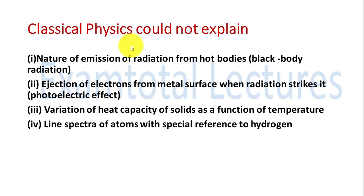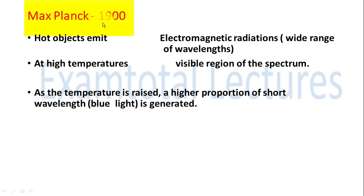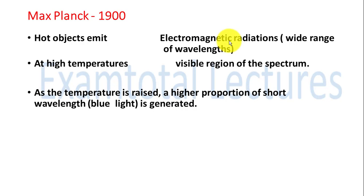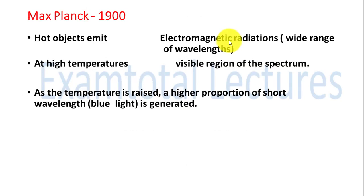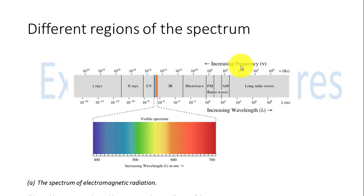Max Planck gave the first concrete explanation for black body radiation in 1900. Matter around us emits radiation at all times. Hot objects specifically emit electromagnetic radiation, and this is not of one type — there is a wide range of wavelengths, as we studied in the electromagnetic spectrum. At high temperature, the amount of radiation present in the visible region increases. That is why when we heat an iron bar to a very high temperature, it emits dull red, then yellow, then white light.